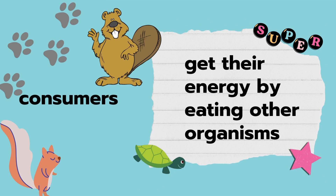Another category of organisms is consumers. Consumers get their energy by eating other organisms. They may eat other consumers, or they may eat other producers. And they may just like to eat both.